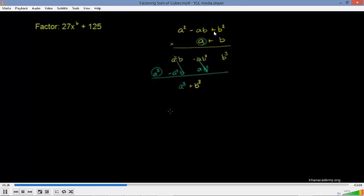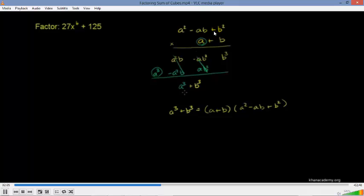When we add up all the terms, the positive a squared b and negative a squared b cancel out, and the negative ab squared and positive ab squared cancel out. So all we're left with is a to the third plus b to the third. In other words, if someone gives you a³ plus b³, this can be factored into a plus b times a squared minus ab plus b squared. This is the sum of cubes special form.